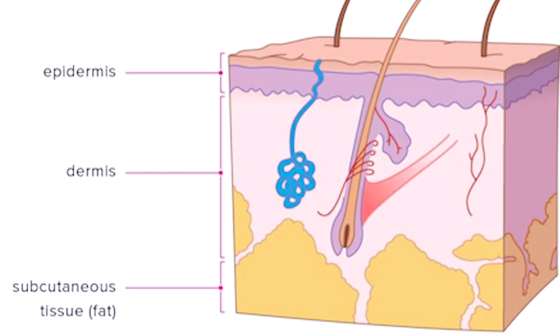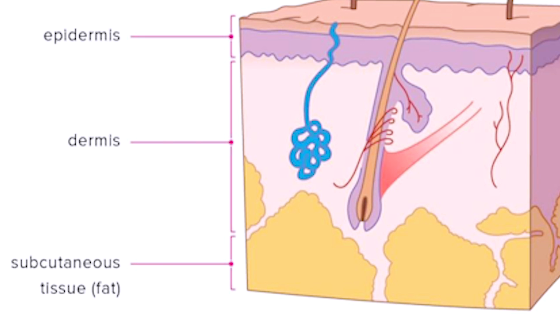Then you have your dermis, which is the layer just under your epidermis, and this is kind of the meat and potatoes of your skin organ. This has all your glands — your hair follicles, sweat and oil glands — and it's about 10 times thicker than your epidermis. Below that you have your subcutaneous layer, which is mainly vasculature and fat, or adipose tissue. Those are your three main layers.